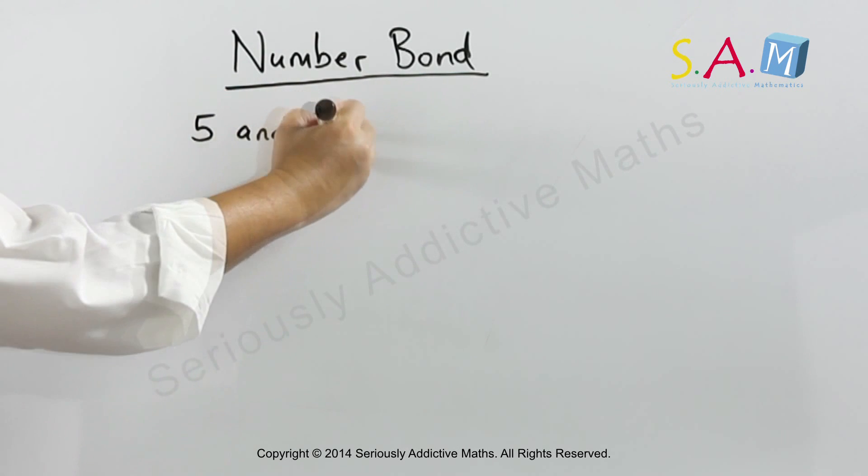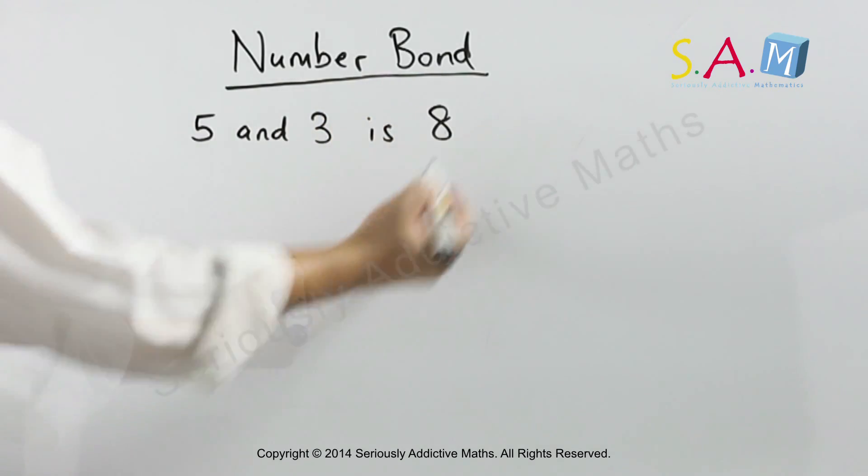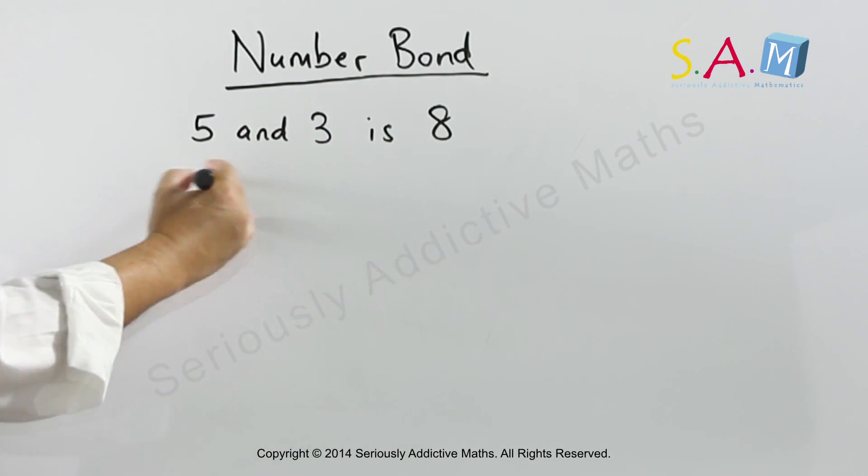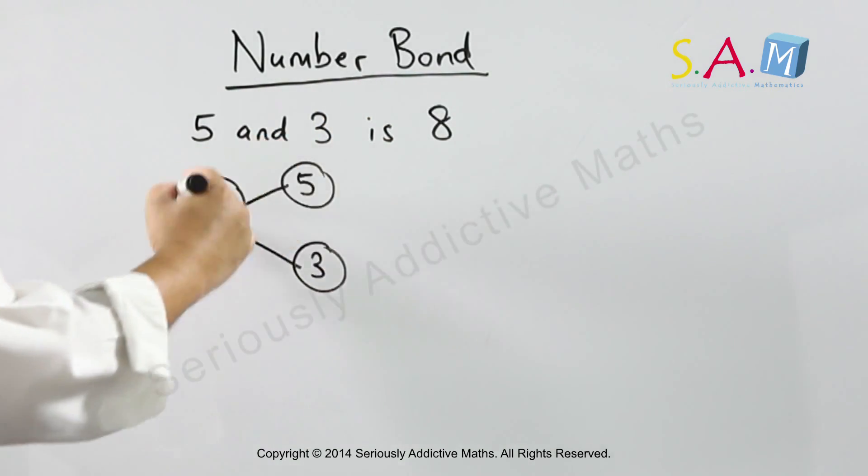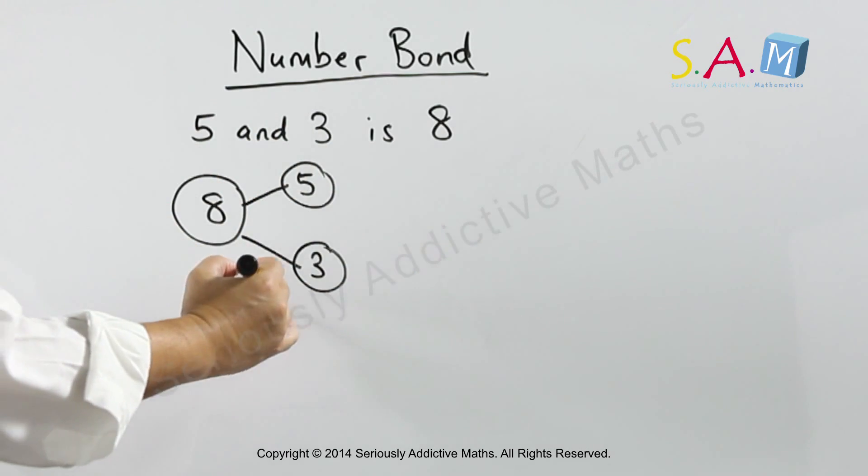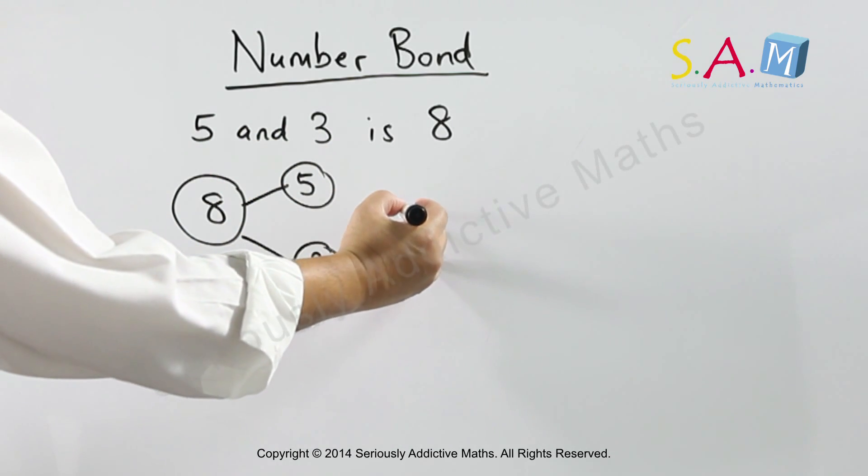5 and 3 is 8. You can show this by a number bond. This is an example of a number bond. You can also show this using dots.